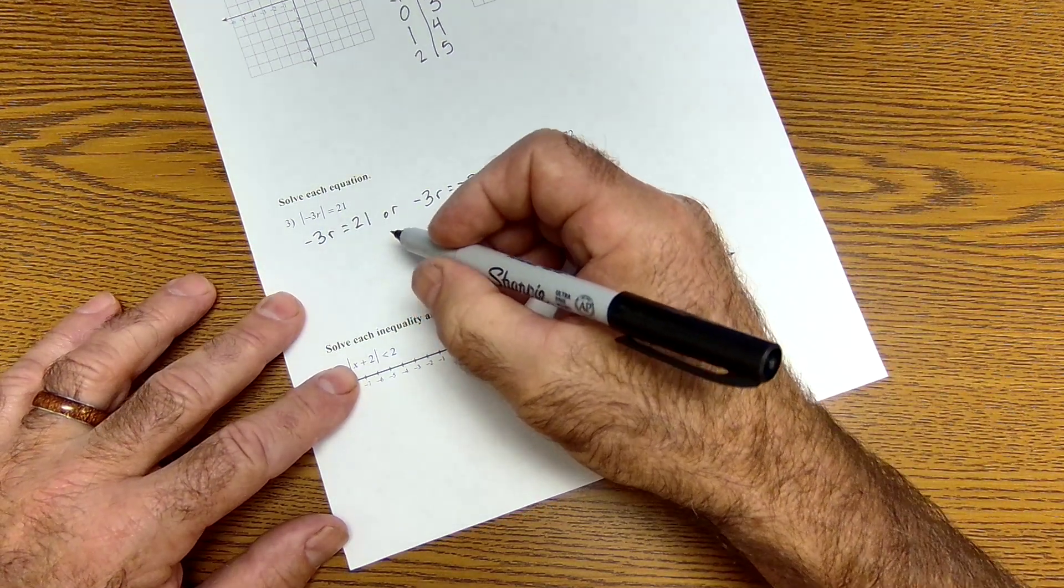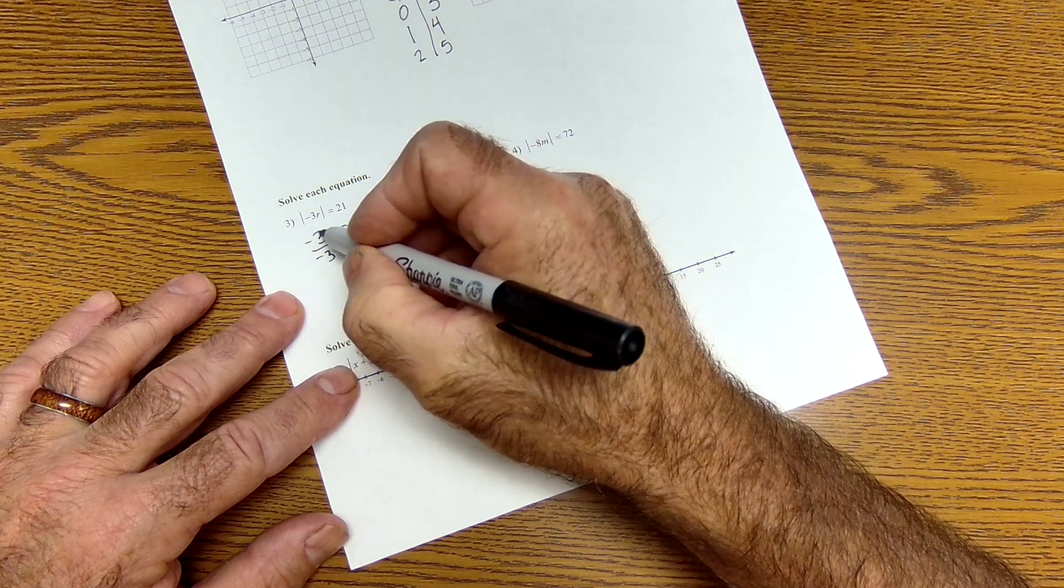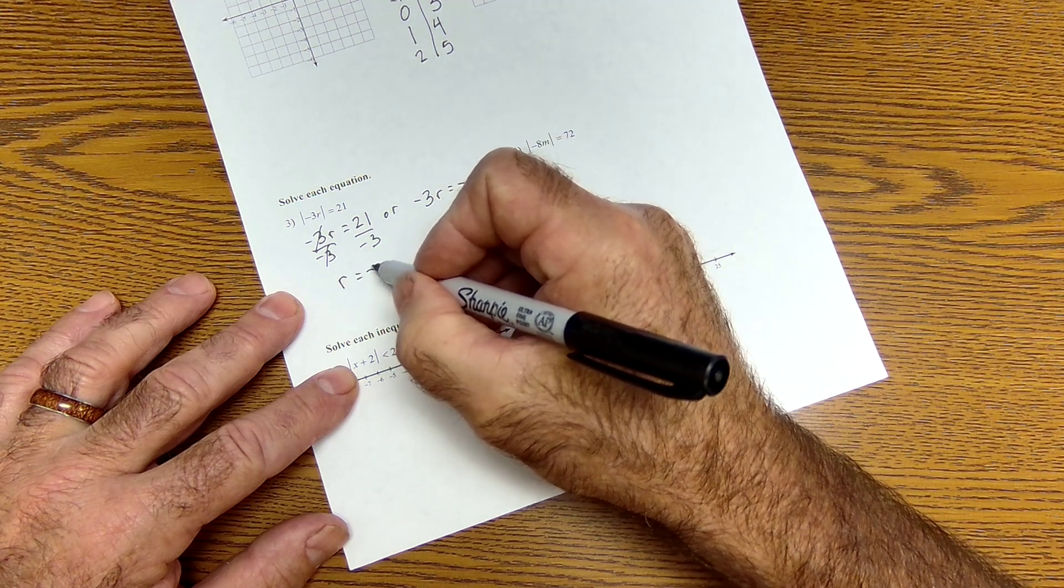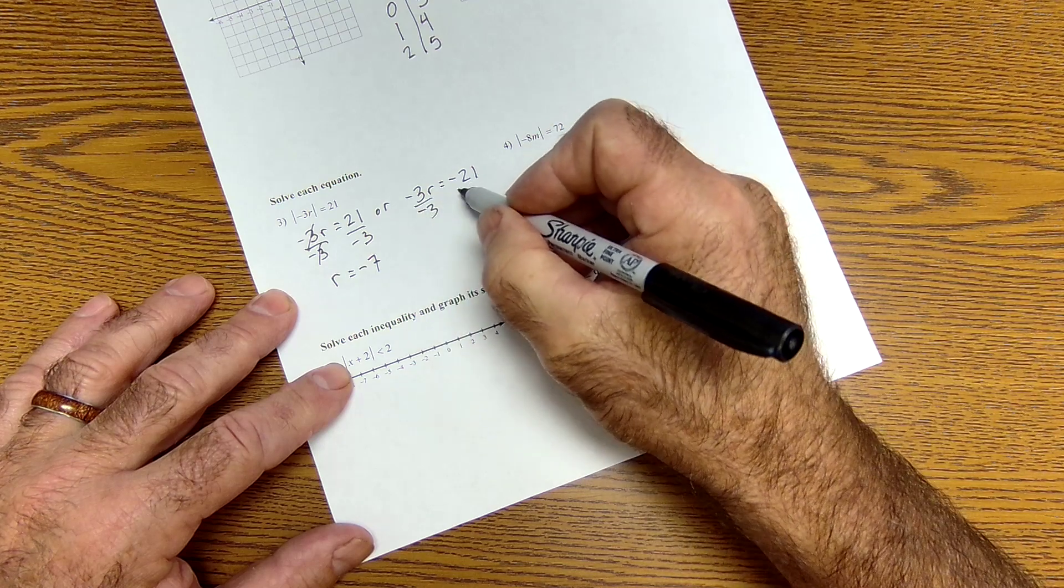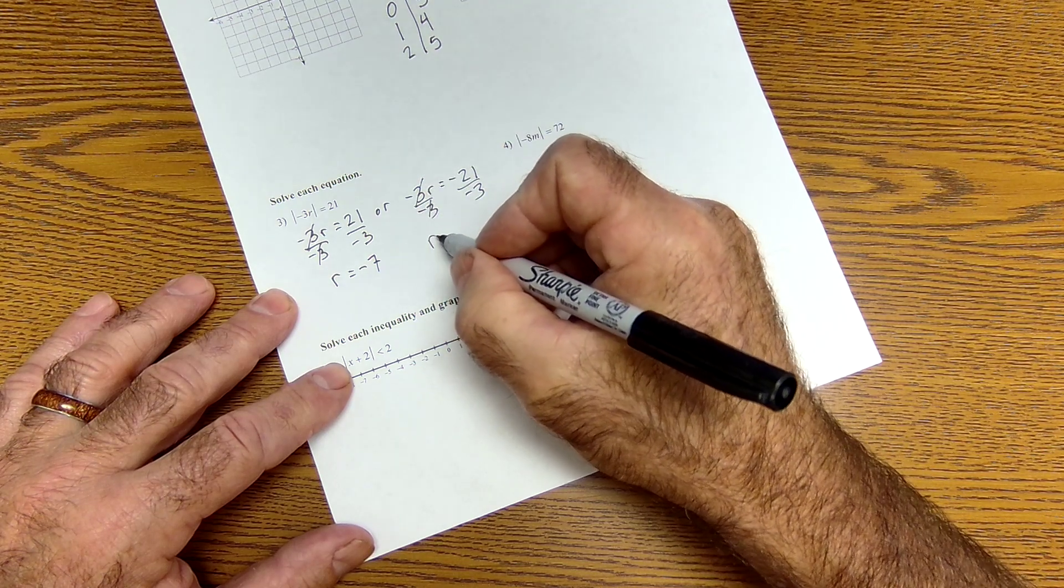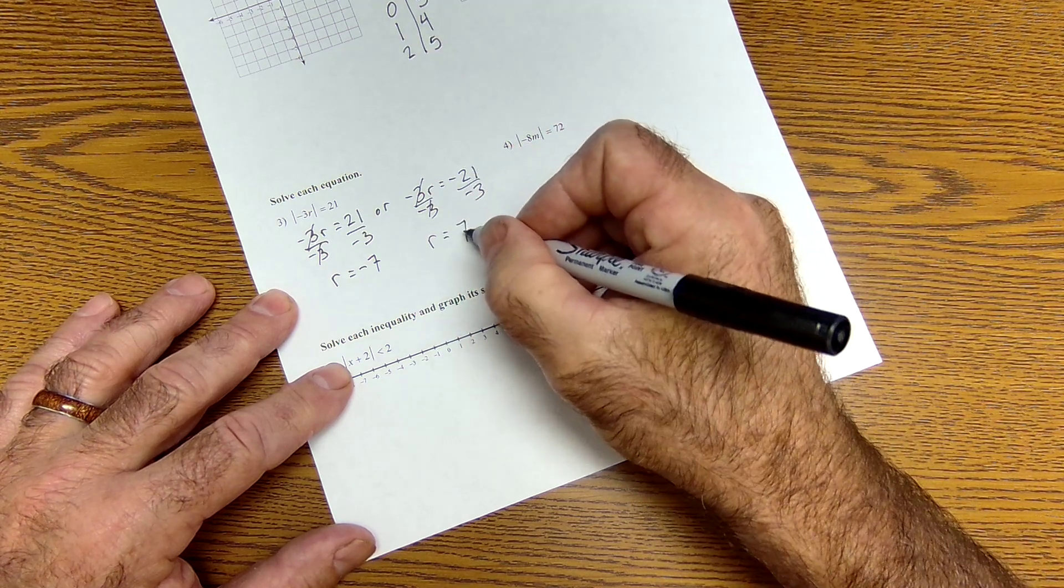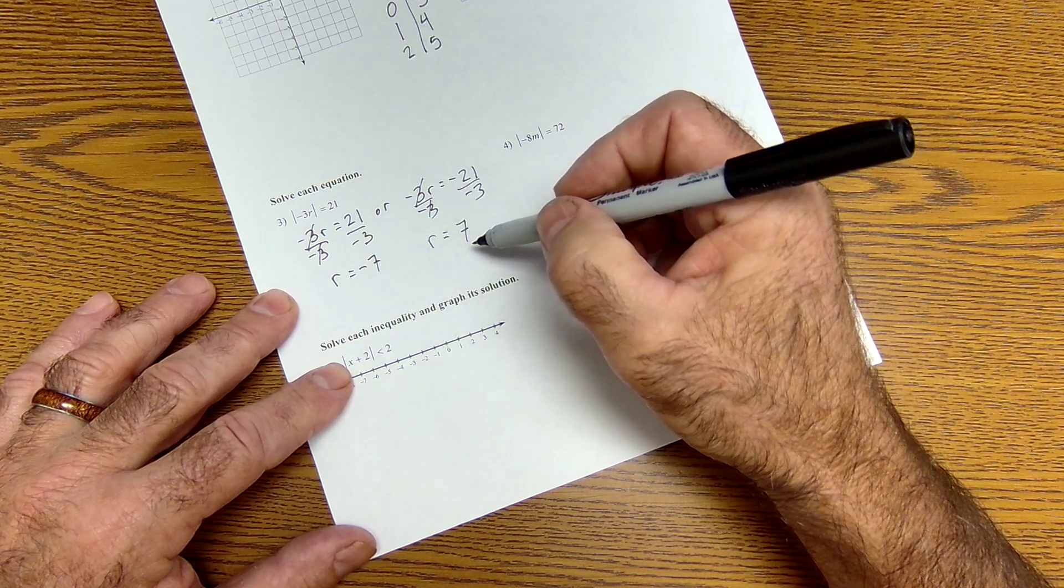Because if negative 3r is equal to negative 21, I'd take the absolute value of it and it would become positive. Now I just solve these equations. Divide both sides by negative 3. r is by itself. 21 divided by negative 3 is negative 7. There's the solution. Same thing over here. Divide by negative 3, giving me r by itself. Negative divided by negative is positive. So I have two solutions, either 7 or negative 7.